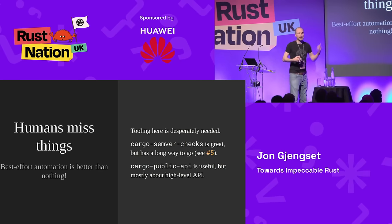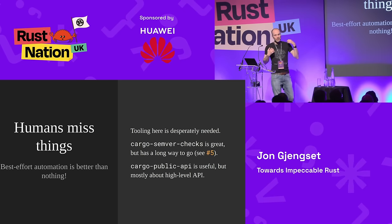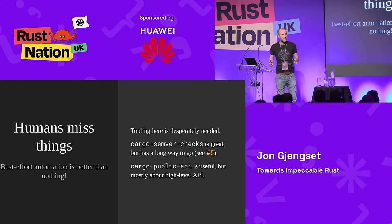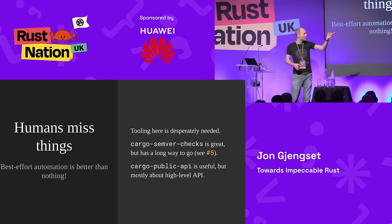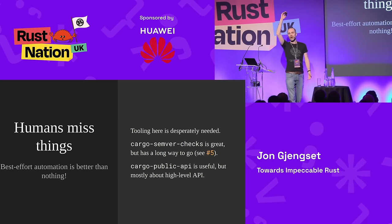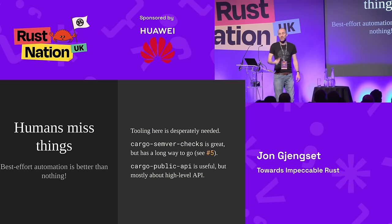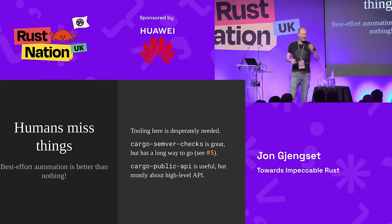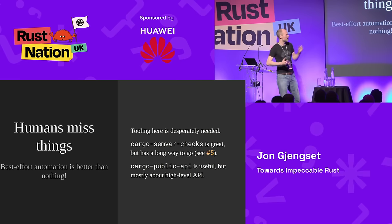Humans miss things — these hazards are hard to keep up with. You need some kind of automation, though best-effort is probably all you'll get. Cargo SemVer Checks is a fantastic tool but its coverage of breaking changes is still fairly limited. If you look at GitHub issue number 5 for Cargo SemVer Checks, there's a whole list of things it doesn't catch yet. Even so, having the signal however weak is still really valuable. There's also a little crate called Cargo Public API that lets you explore your public API and diff it across versions — a useful tool for humans to see what's changed, but it requires a human to go look.